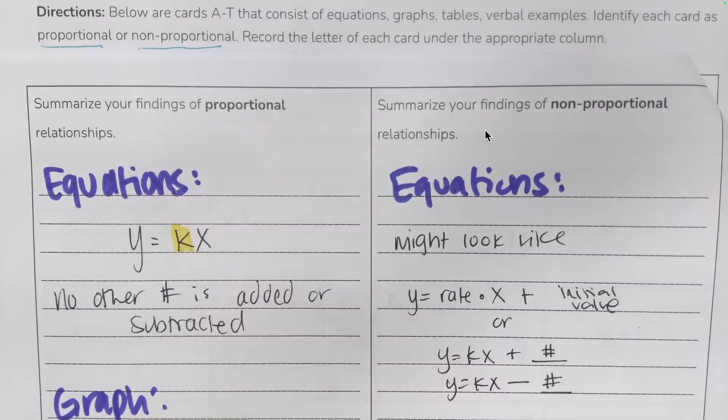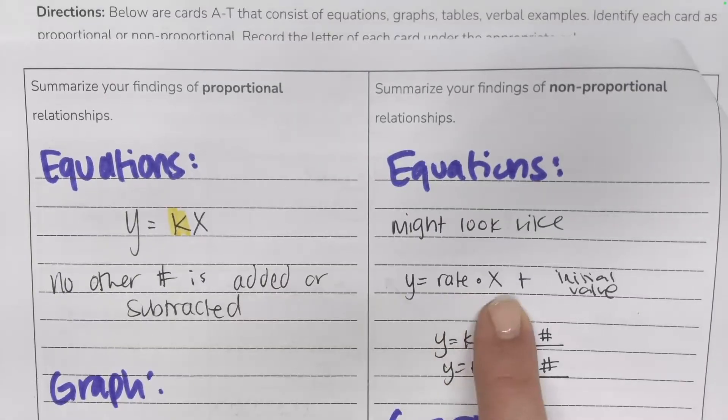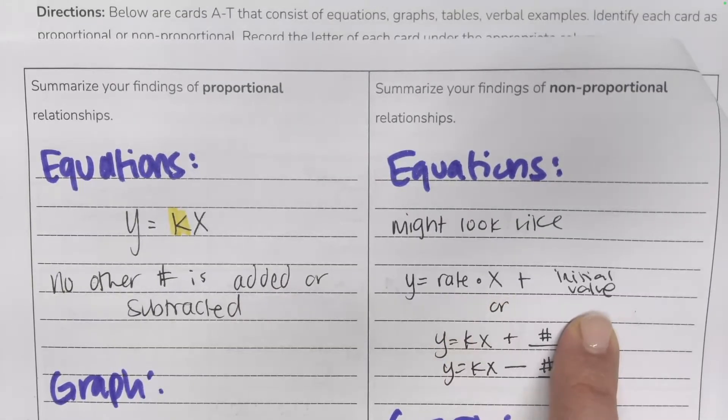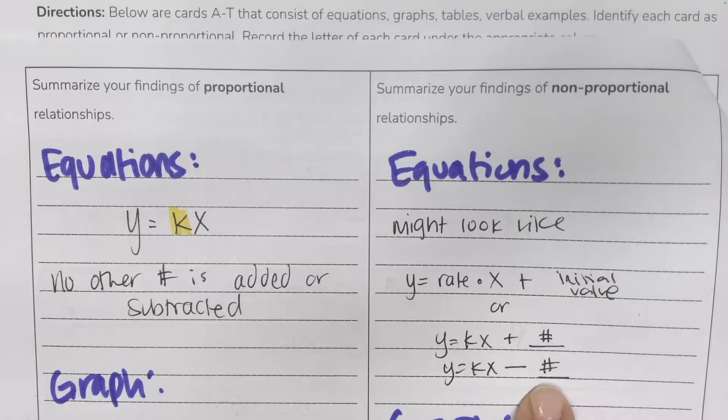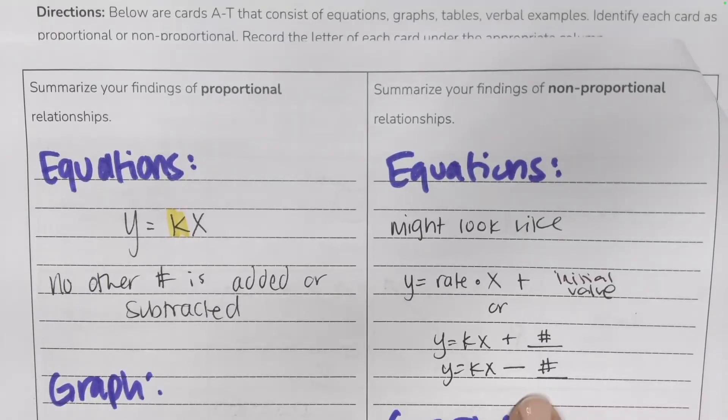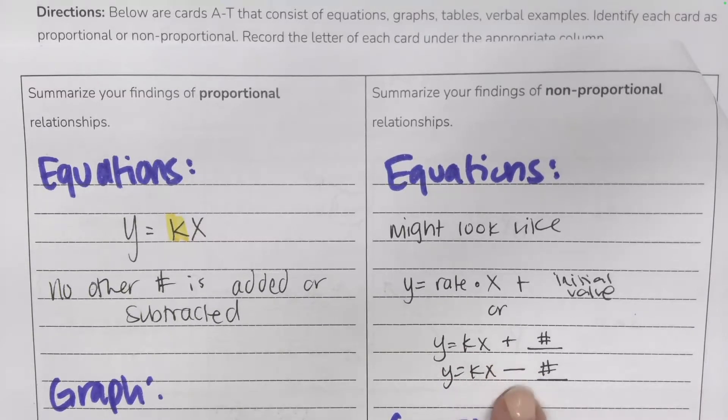So here's an example of what it might look like. Maybe you have a word problem with some type of rate. Something's increasing or decreasing at some rate, but it started at a specific value, like maybe 5 or maybe it started at negative 20. So this is the type of equation you would see if it's not proportional, is that it has some type of constant times the variable plus or minus a number.